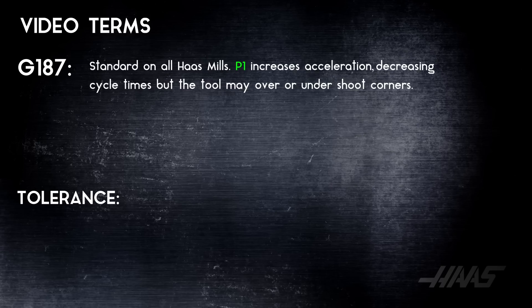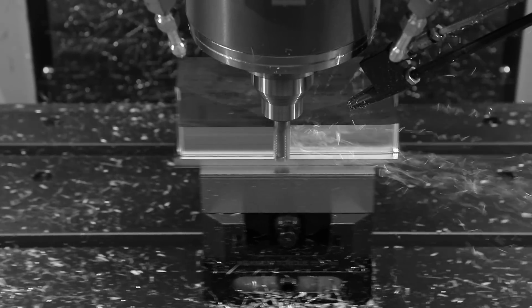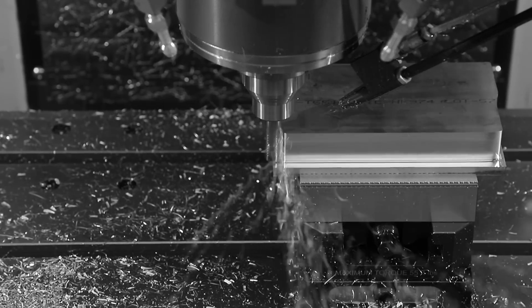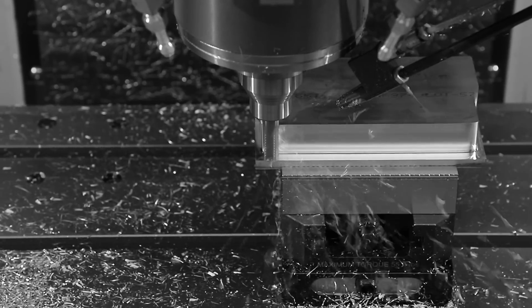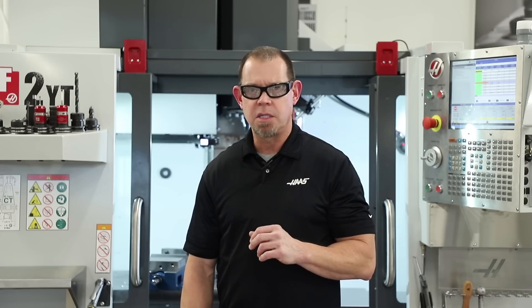Let's get started with G187. You'll hear CJ and I talk a lot about G187 in this video. G187 is a feature that is standard on all Haas mills. Adding a G187 P1 to your program will increase accelerations, which means you'll decrease cycle times, but the tool may slightly overshoot or undershoot corners. This is most useful when roughing when you want to remove as much material as quickly as possible.